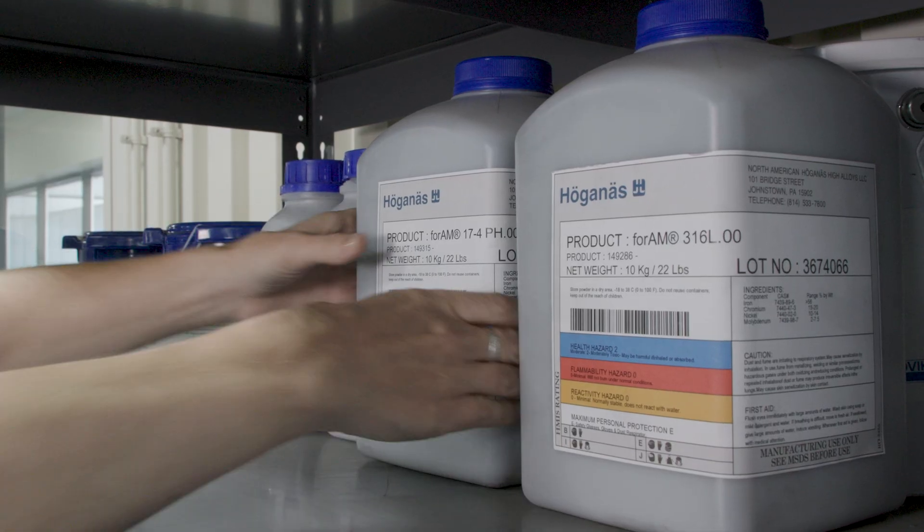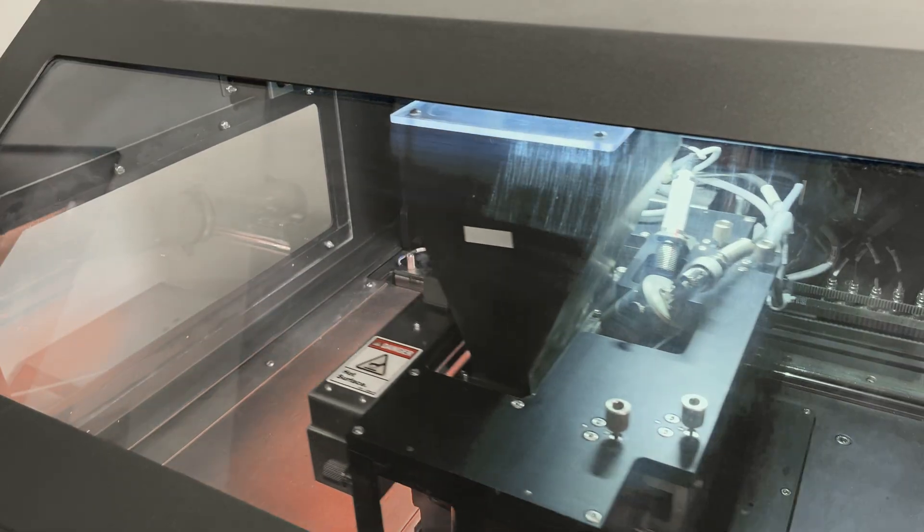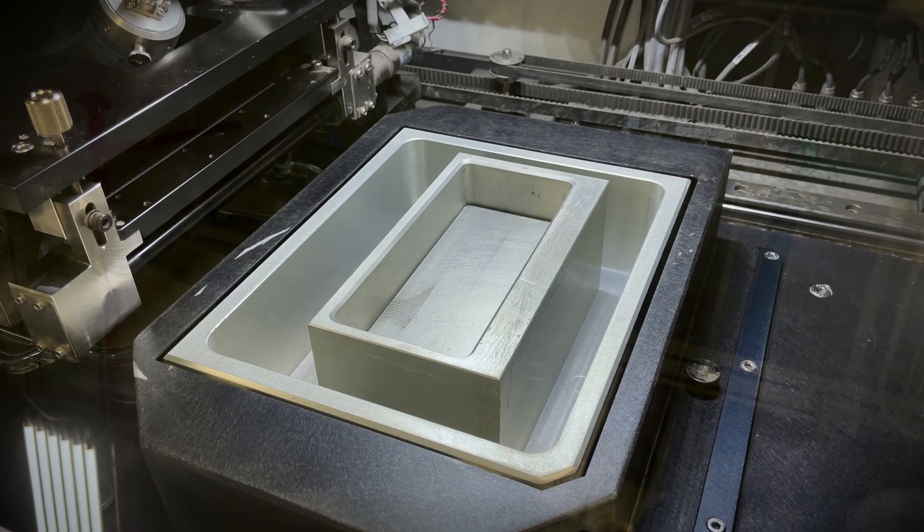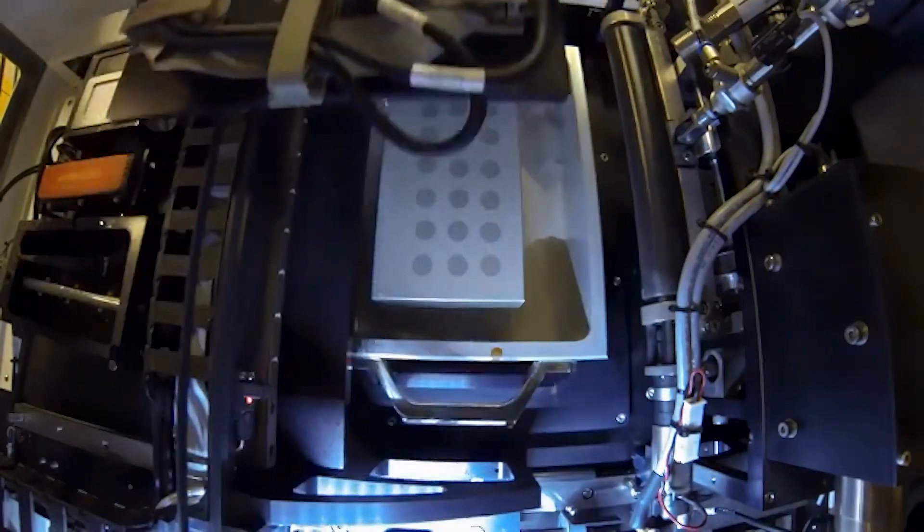The ability to use standard MIM powders keeps costs low, making the NMNX accessible for universities and businesses alike. Its compact build area takes only a 10-pound bag of standard MIM powder to get started.